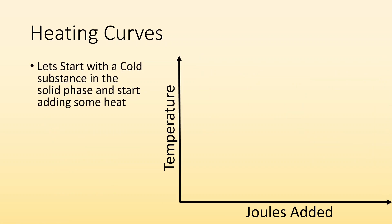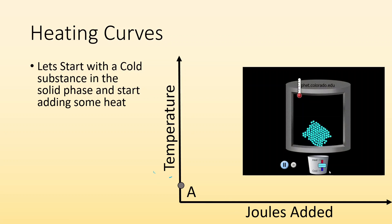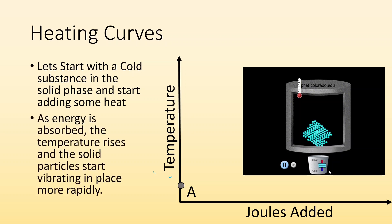So let's start with a cold substance in the solid phase and start adding some heat. Solid phase, I'm going to be low temperature. I haven't added any joules of heat yet, so I'm starting right there. What's it look like? Here's a solid. Definite shape, definite volume. Start adding some heat. And what happens to the particles? They start jiggling around more, start wiggling more, have more kinetic energy as the energy gets absorbed. The temperature rises and the solid particles start vibrating in place more rapidly.